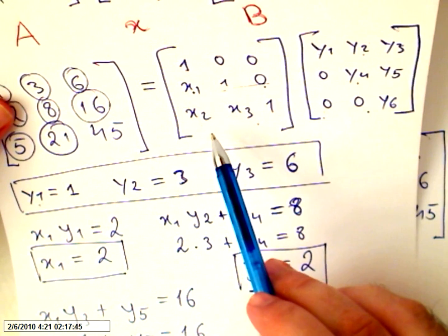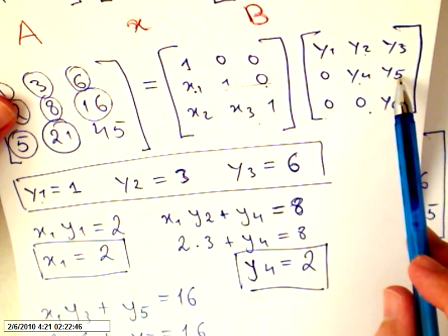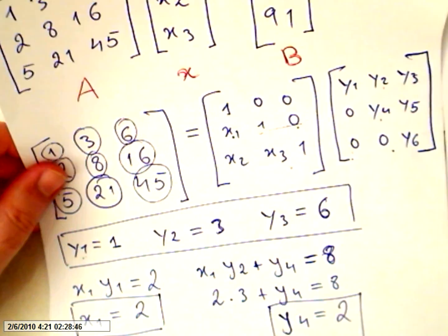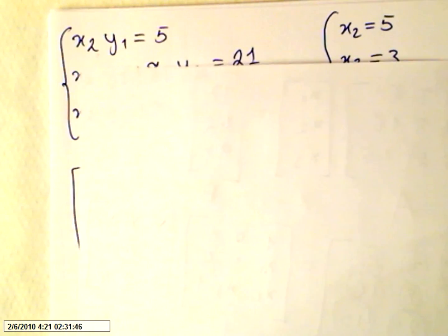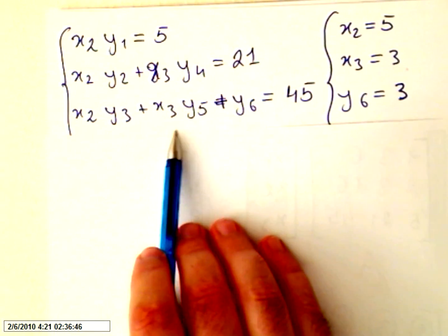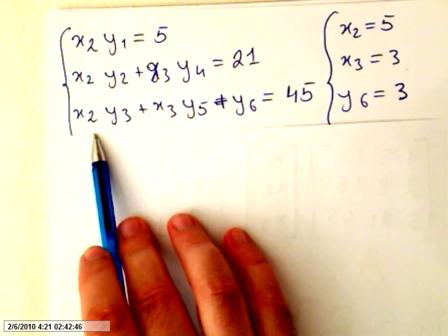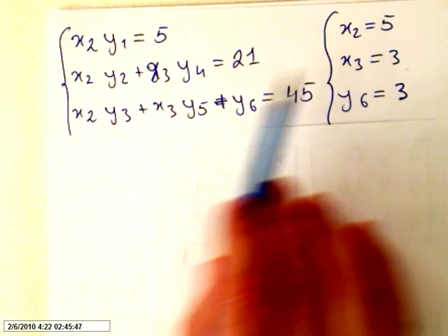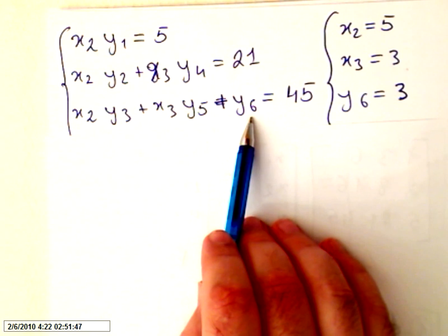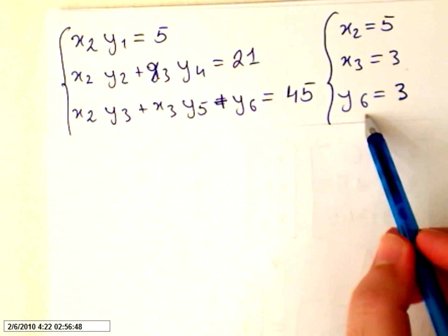Last line: x2 times y3, x3 times y5 and 1 times y6, and it has to be equal to 45. We know x2, we know y3, we know x3 now is 3, we know y5. So the last value is y6, and y6 will be 3.